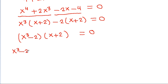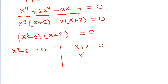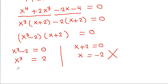Either X³ minus 2 equals 0, or X + 2 equals 0. From X + 2 = 0, we get X equals minus 2, but X cannot be negative, so that is not possible. From X³ = 2, we get X equals the cube root of 2.